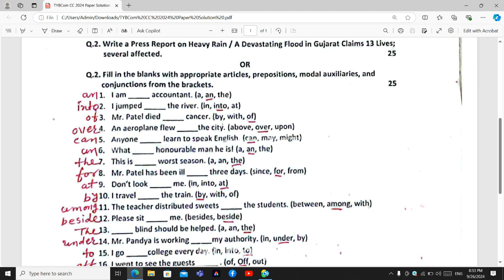Blank number four. An airplane flew over the city. The right option is over because we use over when something is over the head in air.